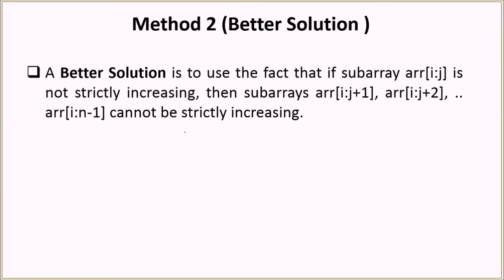A better solution exploits the fact that if a sub-array from element i to j is not strictly increasing, then the sub-array from element i to j+1, j+2, or any further extension will also not be strictly increasing. So if you have three continuous elements not in strictly increasing order, adding more elements cannot make it strictly increasing. We'll exploit this fact in the next algorithm.